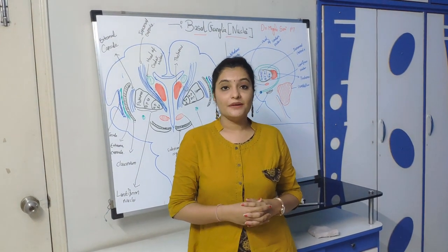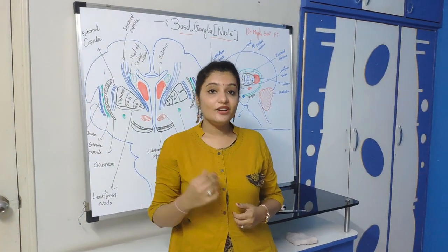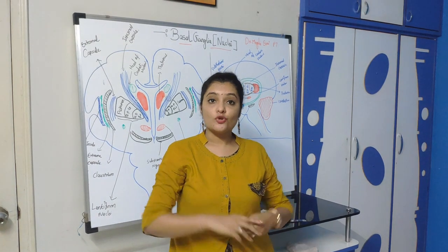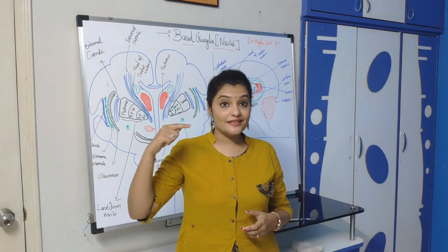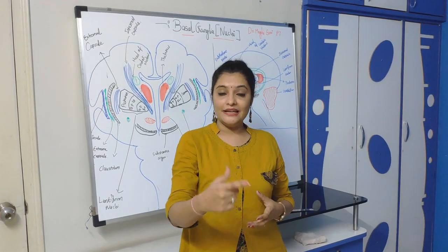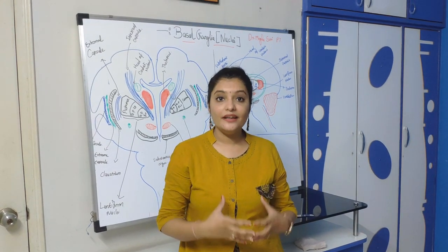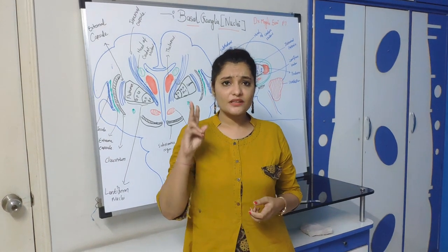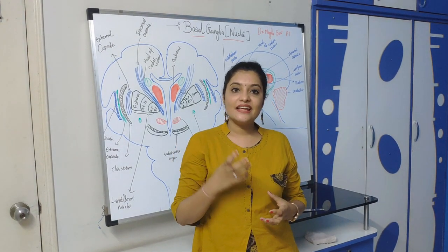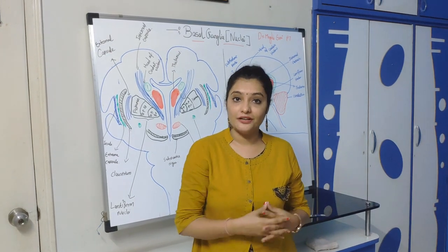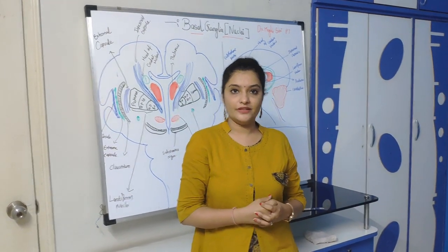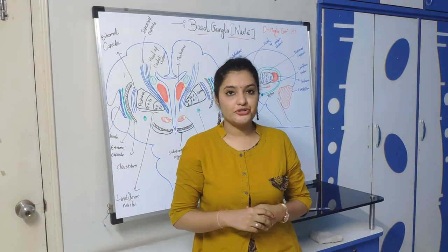Why extrapyramidal? We have seen the pyramidal system, which consists of the corticospinal tract passing from cerebral cortex, midbrain, pons, medulla oblongata and spinal cord. That whole system is called the pyramidal system, and it does not pass from the basal ganglia. So we call basal ganglia an extrapyramidal system, mainly concerned with motor activity like postural activity and involuntary movement. Unlike other motor structures, basal ganglia do not have direct afferent and efferent connections with the spinal cord.